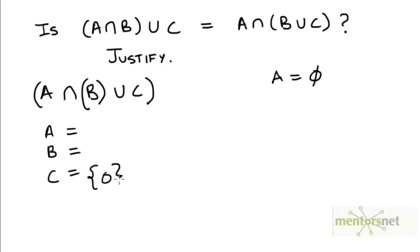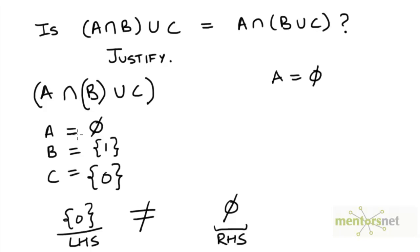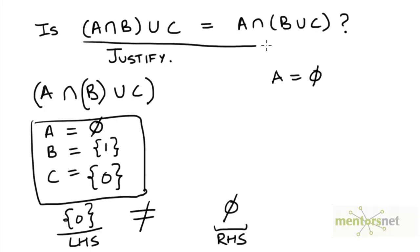So let's take C to be the singleton set {0}, A to be φ, and B to be the singleton set {1} — though B can be any set. A intersection B would be φ. φ union C would just be C, so the left-hand side gives us {0}. On the right-hand side, φ intersected with B union C — which is the two-element set {0, 1} — would be the empty set φ. So the right-hand side is φ, and we can clearly see the left-hand side is not equal to the right-hand side. This is a counterexample that disproves the general claim.